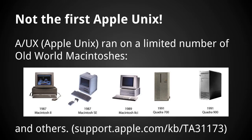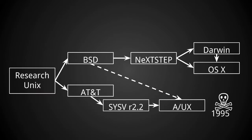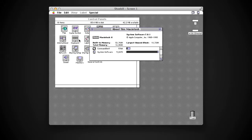But this isn't the first Apple Unix. After Steve founded NeXT, Apple looked back and thought NeXT was going after the workstation market and they should probably have a product there too. They got a couple of developers together and ported a System V Unix to the Macintosh — this is called A/UX, and it ran on a limited number of old world Macs, with the last release in 1995. The Unix history graph looks like this: on the left is the beginning — Research Unix by Ken Thompson and Dennis Ritchie — then System V in the middle, then A/UX from the late 80s to mid 90s.